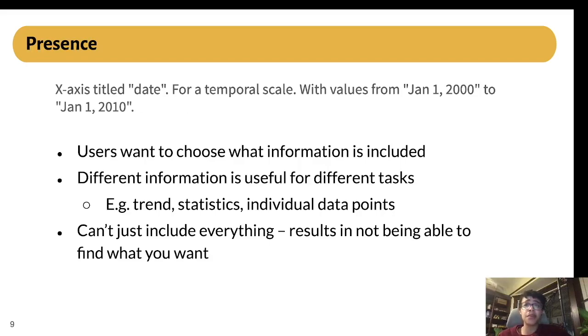Presence is an important goal because users want to be able to choose what kind of information they hear. Different types of info are each useful for carrying out different tasks on the data. Leaving something out might prevent someone from learning what they want to know. But at the same time, including all the possible information about a piece of data isn't a great solution because it leads to very long descriptions. Even though such a description might technically have all the information someone is looking for, they'll likely struggle to find what they want if it's buried amongst lots of stuff that they don't want.